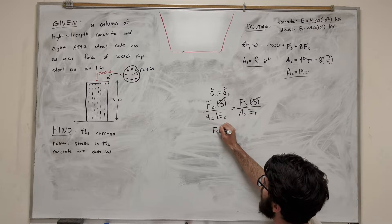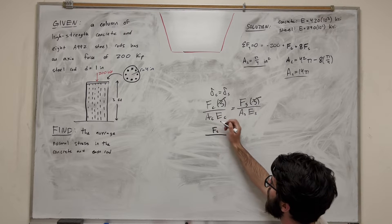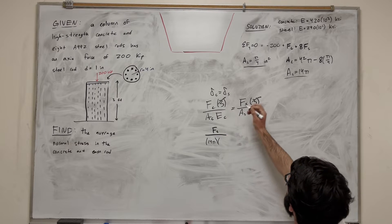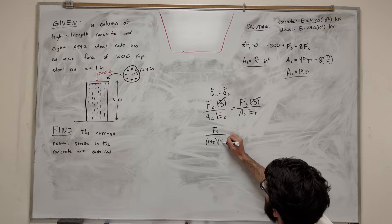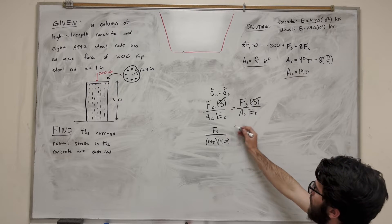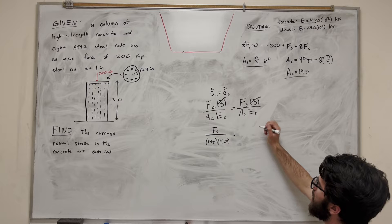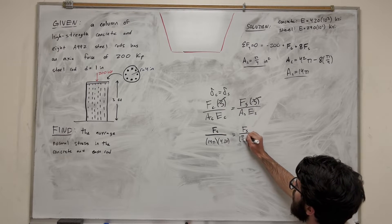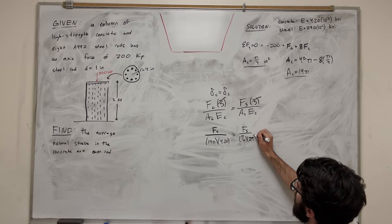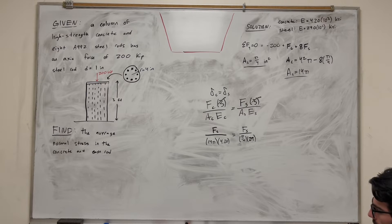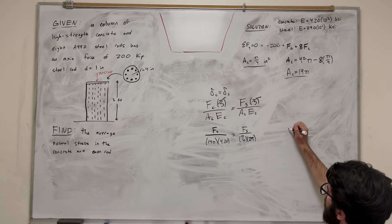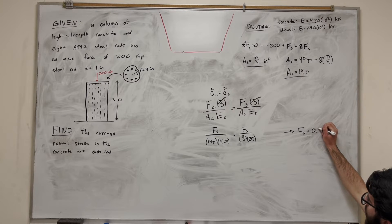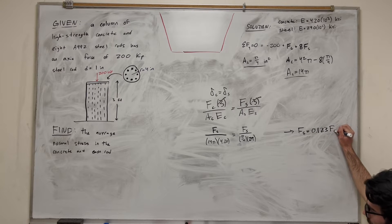So bringing that down, force of the concrete is equal to area of the concrete. We calculated that to be 14 pi. And then the modulus of elasticity of the concrete, 4.20. Now I'm not going to add that 10 to the third, because there's going to be 10 to the third on the other side, so it's not really necessary. So we know that then the force of the steel is equal to the area, so pi over 4, and then modulus of elasticity, 29. So what we can do is we can multiply this over and do some math. And this is going to bring you to that the force of steel is equal to 0.123 times that of the force of the concrete.